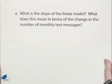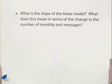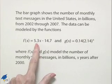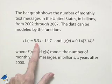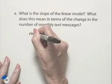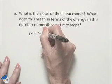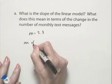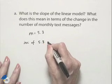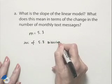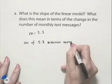What is the slope of the linear model? What does this mean in terms of the change in number of monthly text messages? Looking back at the linear model, we see that we have a slope of 5.3. So we can say that the slope m equals 5.3. We can interpret this to mean there's an increase of 5.3 billion texts per year.